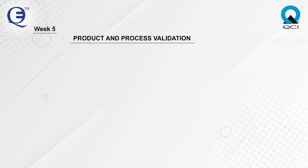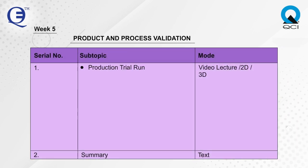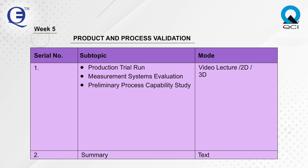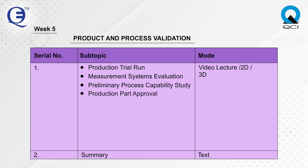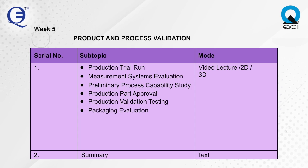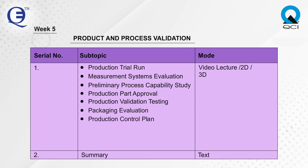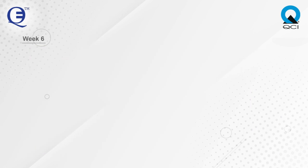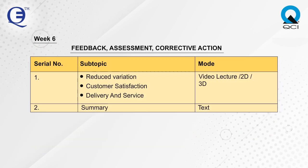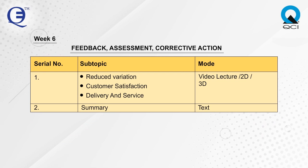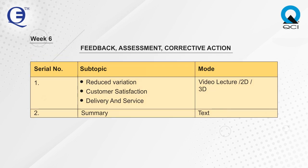Week 5 covers Product and Process Validation, including Product Trial Run, Measurement System Evaluation, Preliminary Process Capability Study, Production Part Approval, Production Validation Testing, Packaging Evaluation, Production Control Plan, and Quality Planning Sign-Off and Management Support. Week 6 covers Feedback, Assessment, Corrective Action, Reduced Variation, Customer Satisfaction, and Delivery and Service.